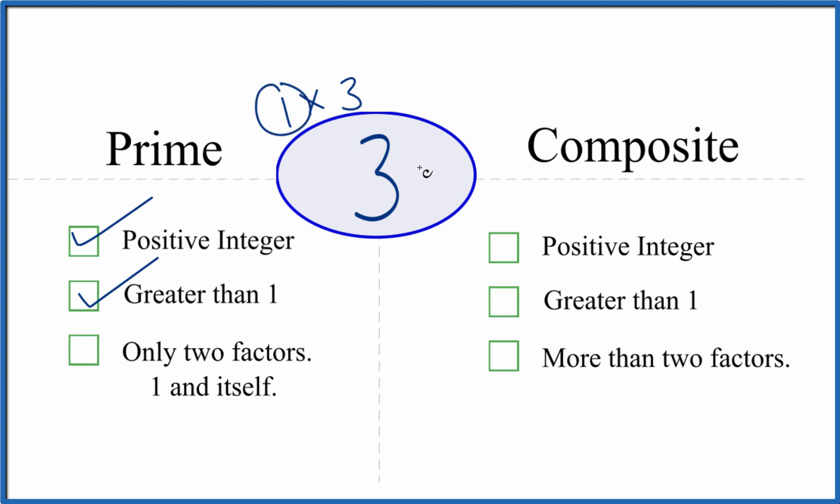It turns out there aren't any other numbers, any whole numbers, that go evenly into 3 other than 1 and 3. So we have 1, 2 factors. That means that 3 is a prime number.